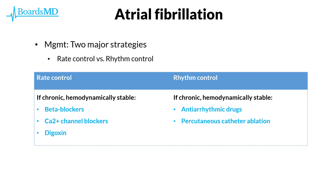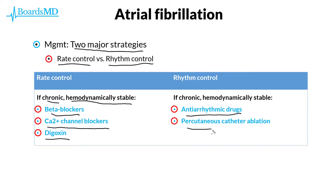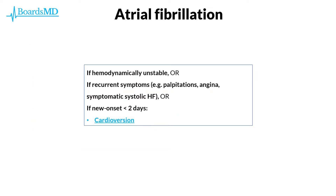In addition to anticoagulation based on the CHADS-2 VASc score, we also have two major strategies for control of the patient's rhythm: rate control and rhythm control. In rate control, we are trying to slow down the patient's heart rate, whereas in rhythm control we are actually trying to normalize the patient's abnormal and irregular rhythm. If pursuing rate control for a patient with chronic, hemodynamically stable AFib, we can utilize beta blockers, calcium channel blockers, or digoxin. If pursuing rhythm control in chronic hemodynamically stable patients, we can use antiarrhythmic drugs or procedures such as percutaneous catheter ablation to ablate the patient's abnormal foci.